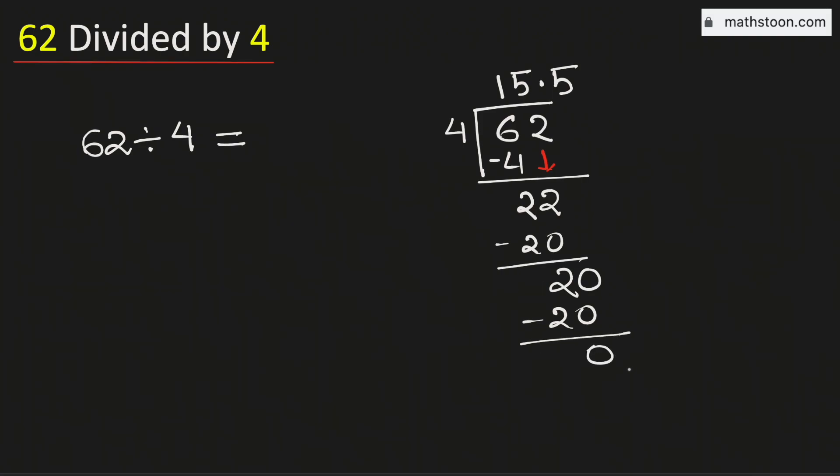As we have obtained the number 0, so we will stop. Therefore, 62 divided by 4 is equal to 15.5. And this is our final answer.